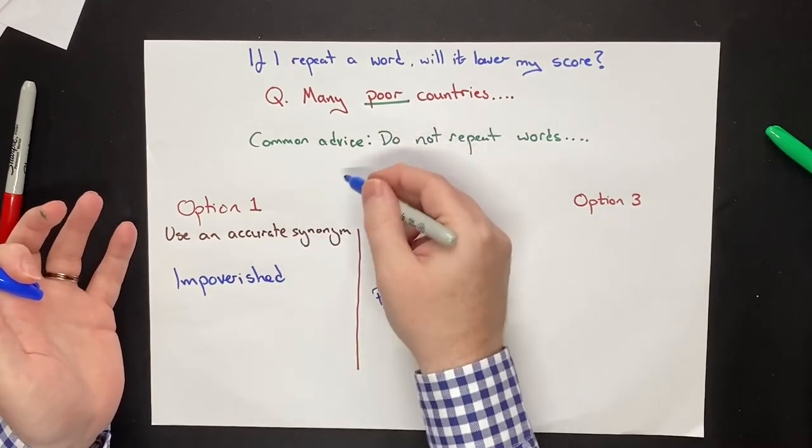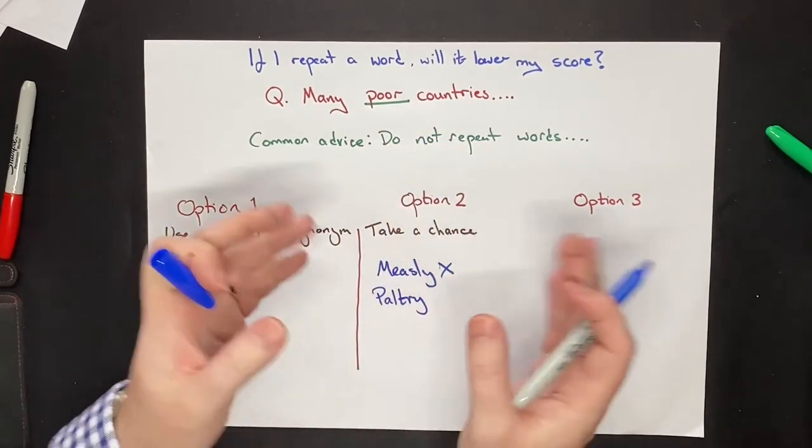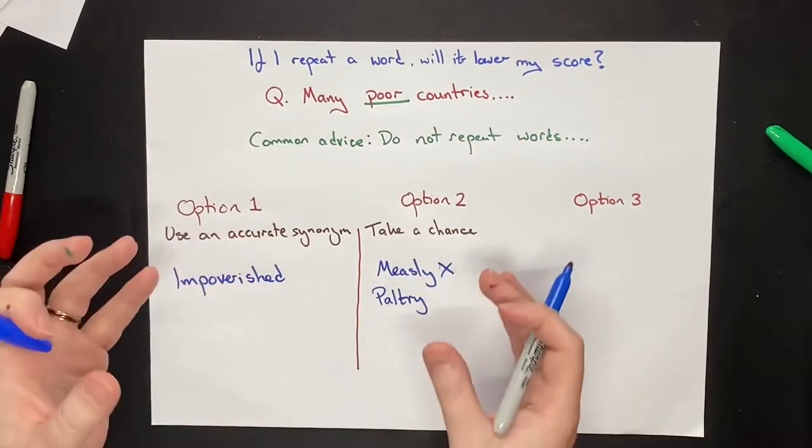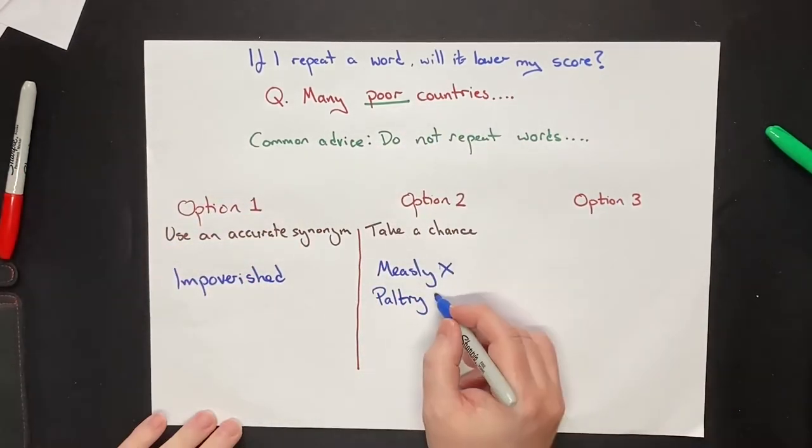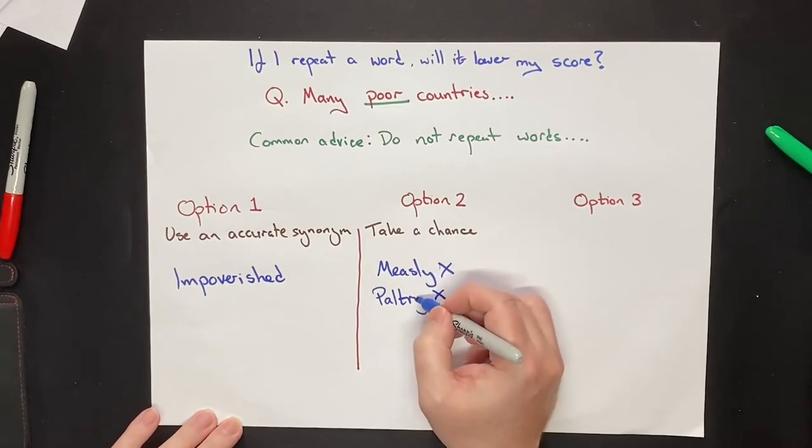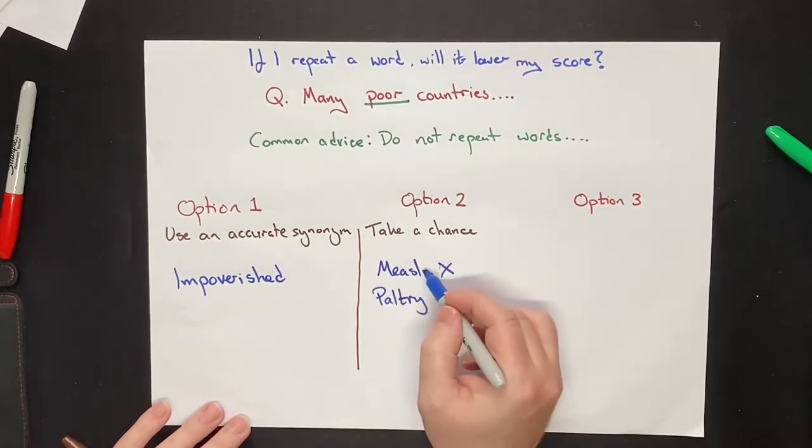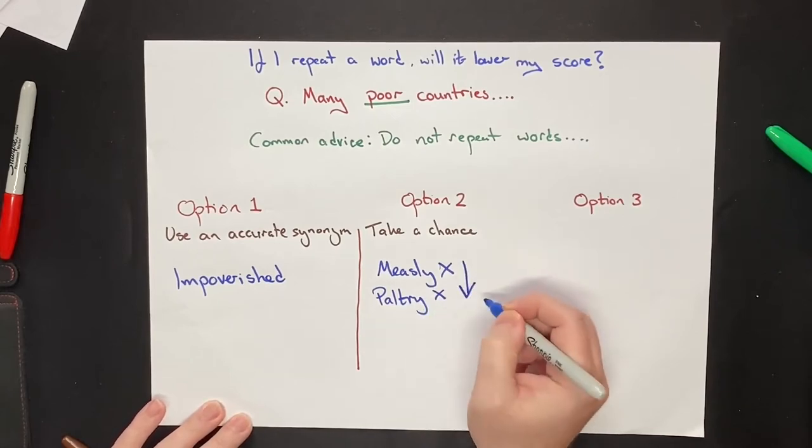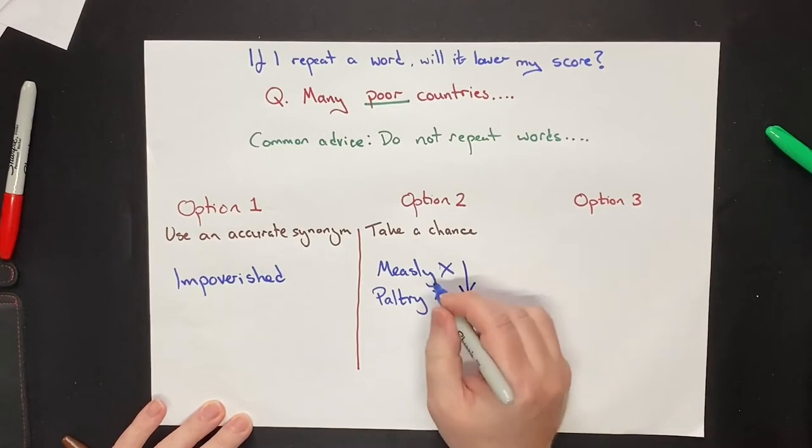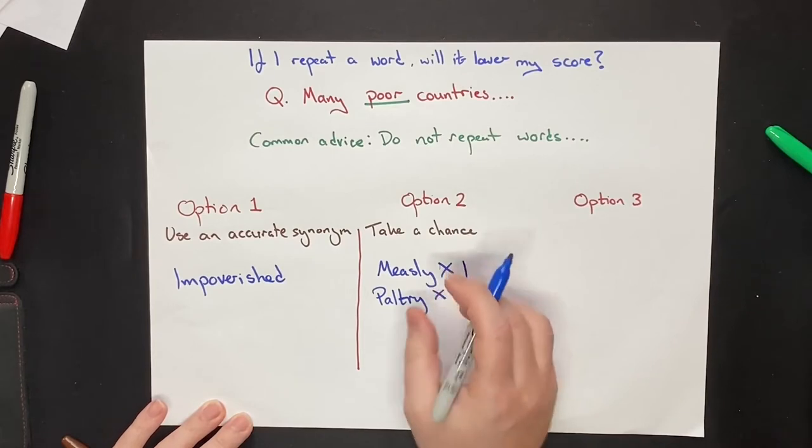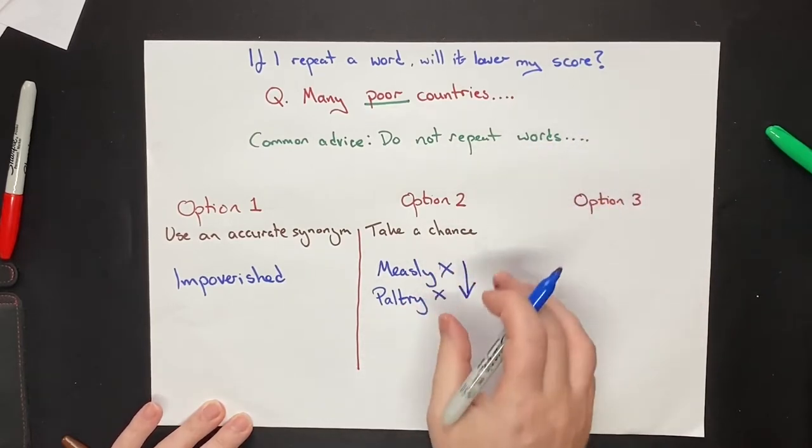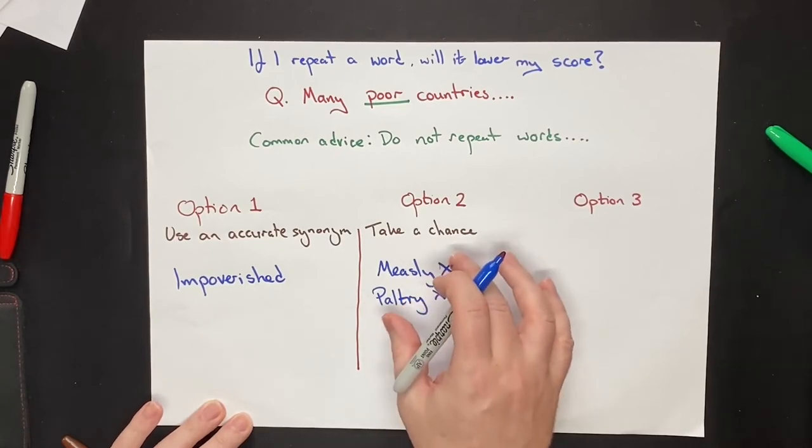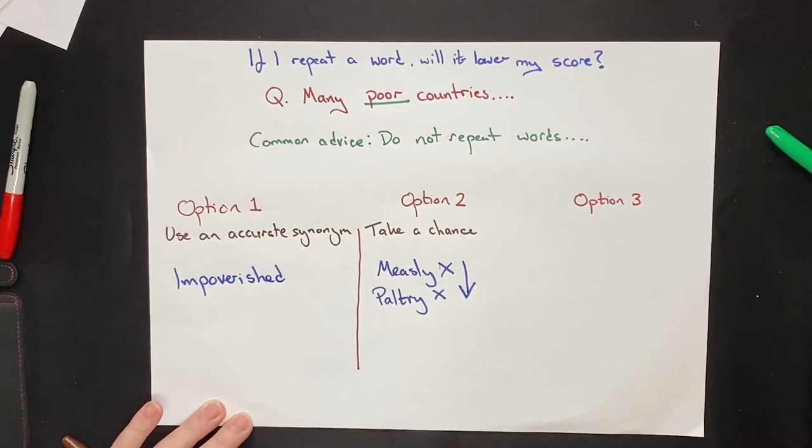This would be wrong, because what you are indicating to the examiner is you don't really understand the meaning of these words. So by changing the words to measly and paltry, you are not increasing your score, you are decreasing your score, because you're demonstrating that you do not know how to use these words. Even though they're quite complex words, they're quite high level words, it's not about using high level words. It is about using words that are accurate.